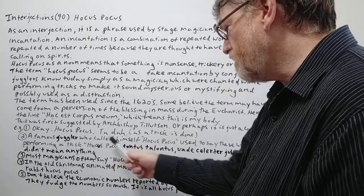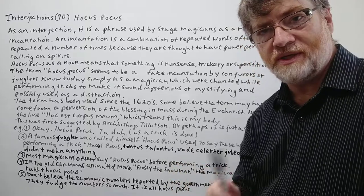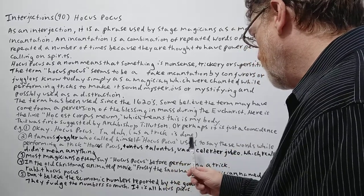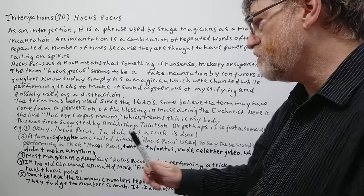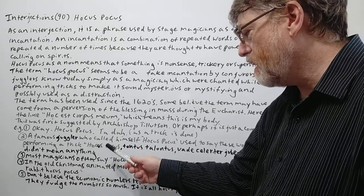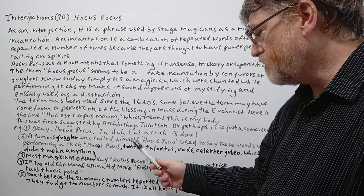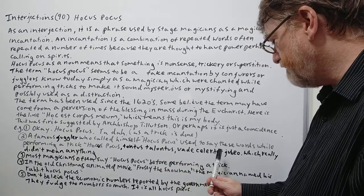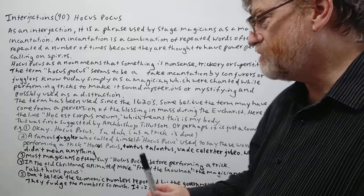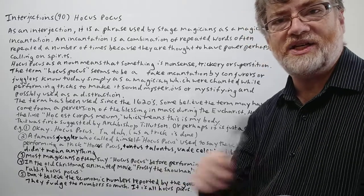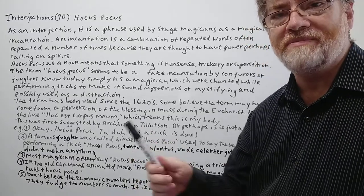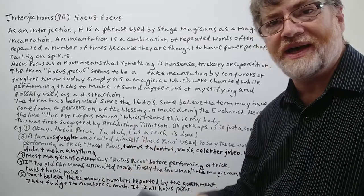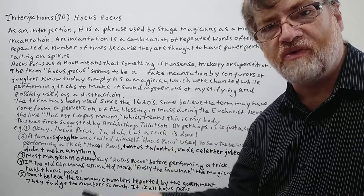A famous juggler who called himself Hocus Pocus, so that's not his real name, that's the name that he used, used to say these words performing a trick: Hocus pocus, tauntus tauntus tauntus, vade celerita jubio, which really didn't mean anything. He kind of just made it all up again to sound more mysterious, more mystifying. It's better for the performance.